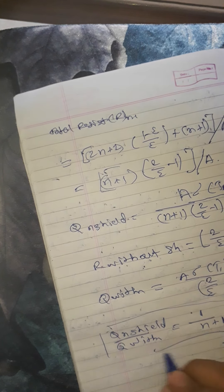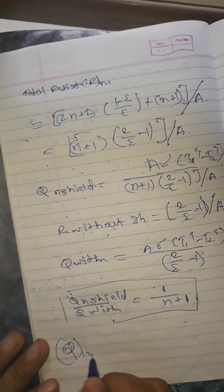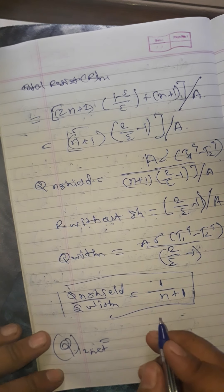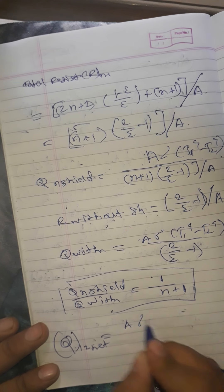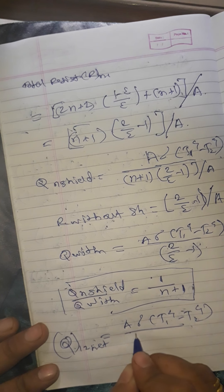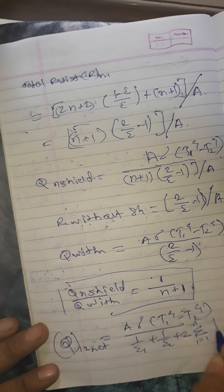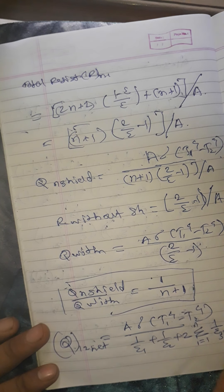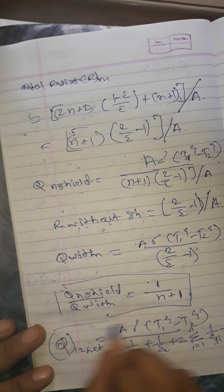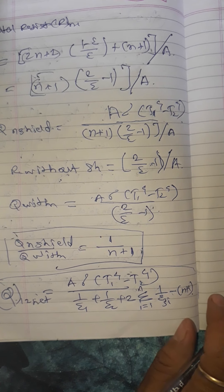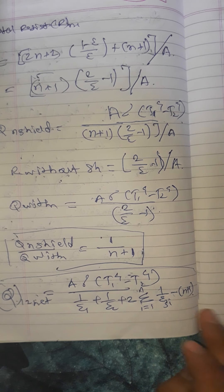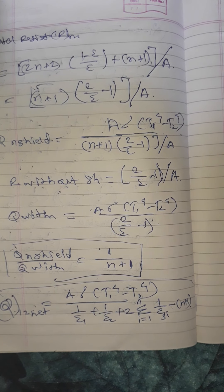Providing the reduction of heat flow, from the equations, we can find out the general formula for N number of shields. Q 1 to 2 net equals A sigma times T1 raised to 4 minus T2 raised to 4, divided by 1 upon epsilon 1 plus 1 upon epsilon 2 plus 2 times the summation from i equals 1 to N of 1 divided by epsilon shield i, minus N plus 1. This is the formula for N number of shields — you can use this formula for any number of shields.